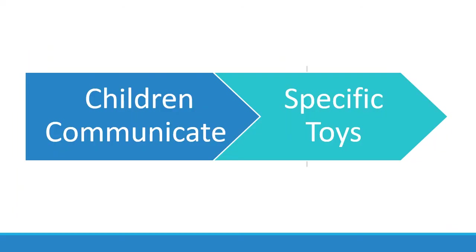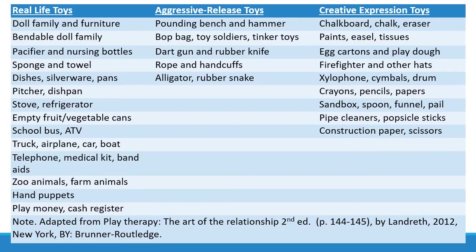Children communicate using specific toys that are carefully chosen for specific reasons. Real-life toys include doll families, pacifiers, nursing bottles, babies, sponge and towels, dishes, silverware, pans, a mini kitchen with stove and refrigerator, fruits and vegetables, school bus, cars, trucks, airplanes, a play phone, medical kit, band-aids, animals, puppets, and play money with a cash register.